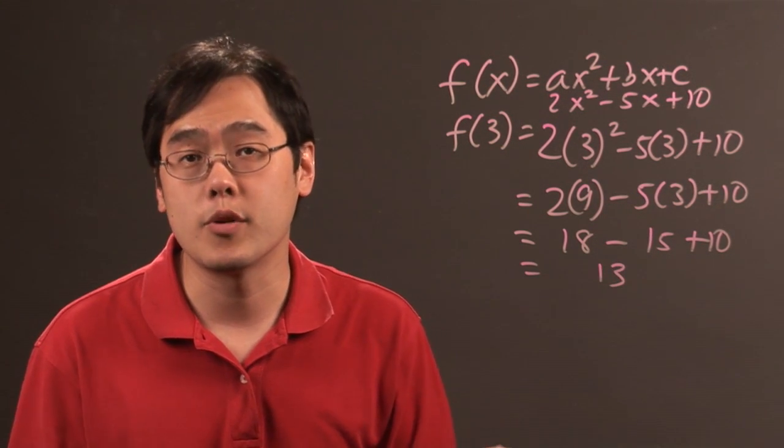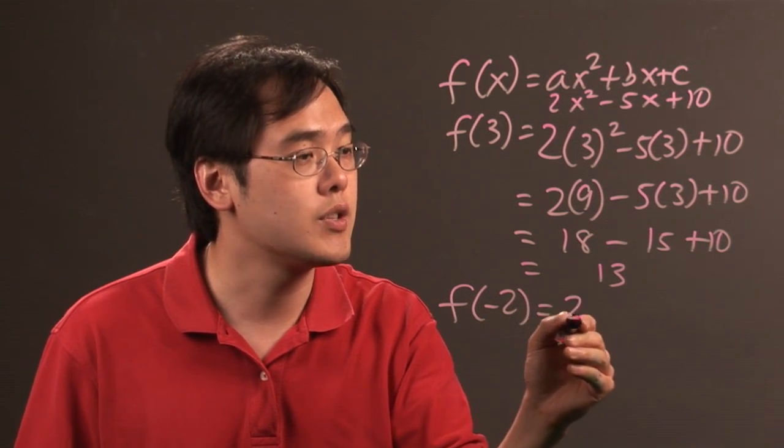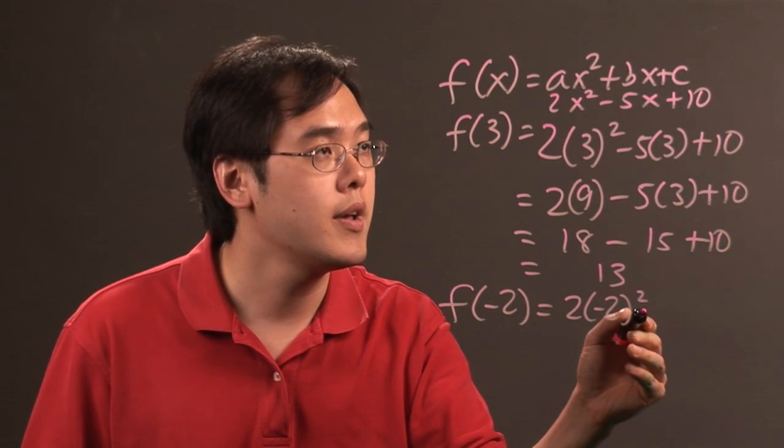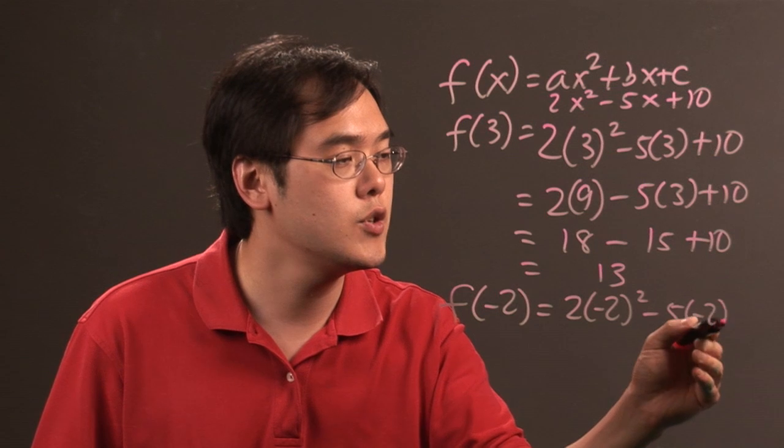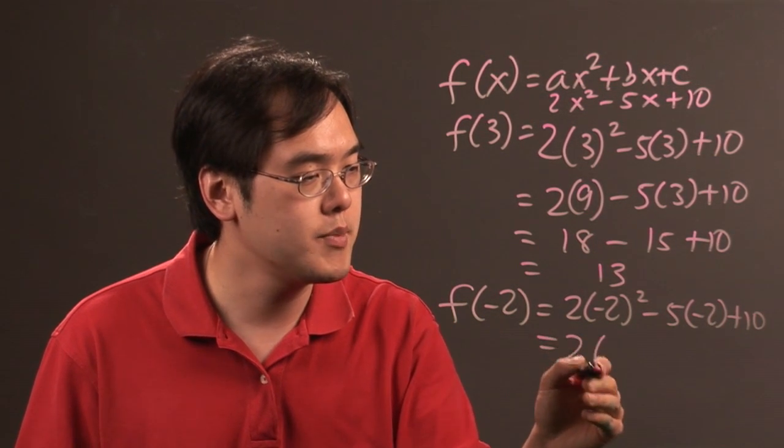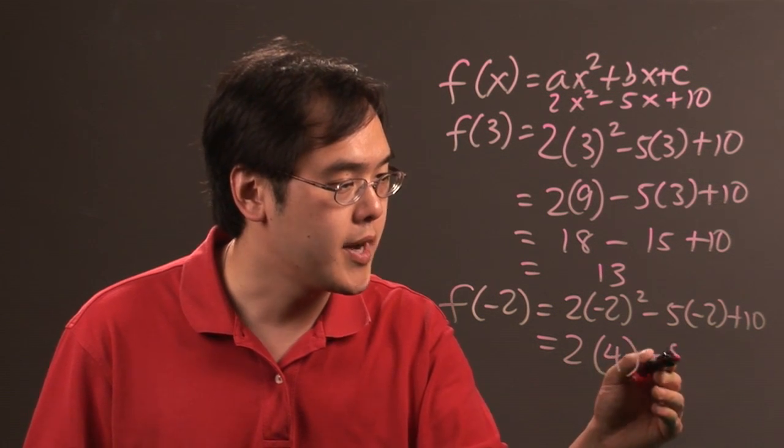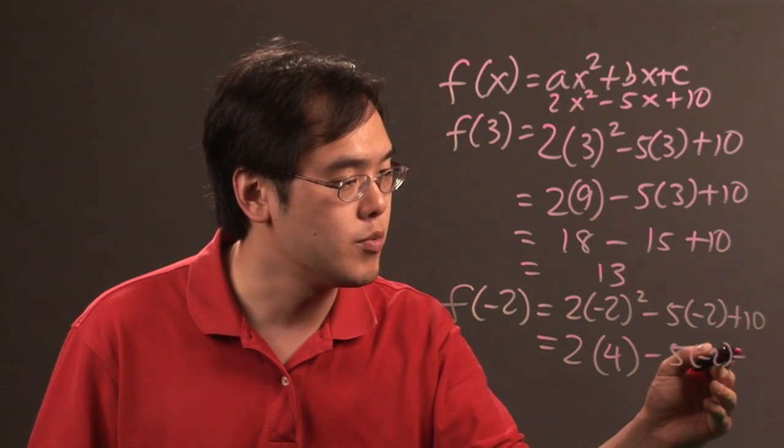Now the same kind of idea would be if you were to plug in negative numbers. Let's just say f of negative 2. You're going to have 2 times negative 2 squared minus 5 times negative 2 plus 10. So the idea here is you have 2 times negative 2 squared is going to give you positive 4 and then minus 5 times negative 2 plus 10.